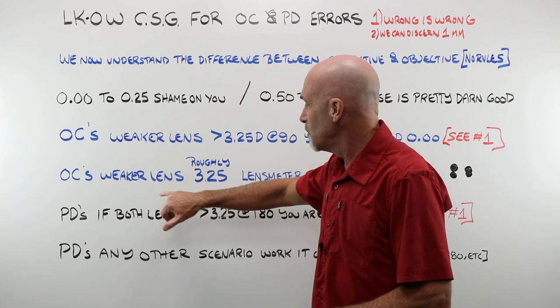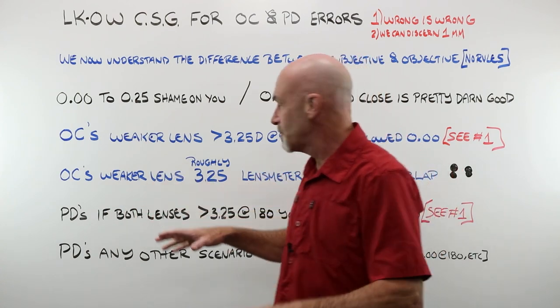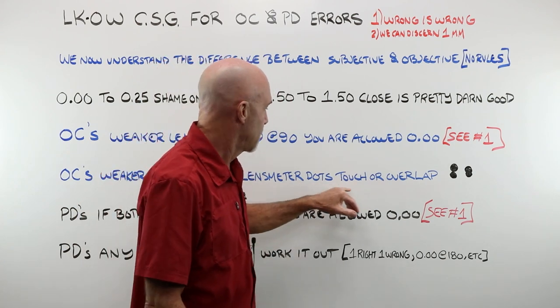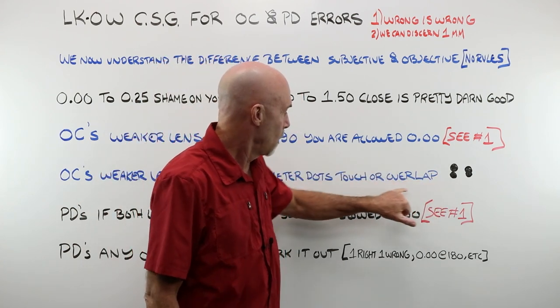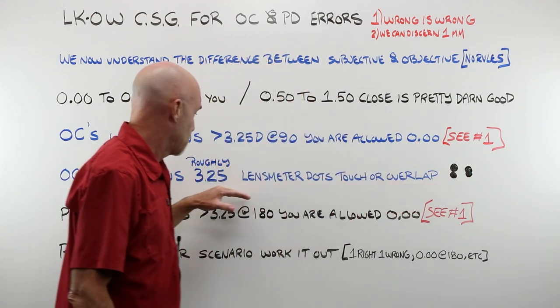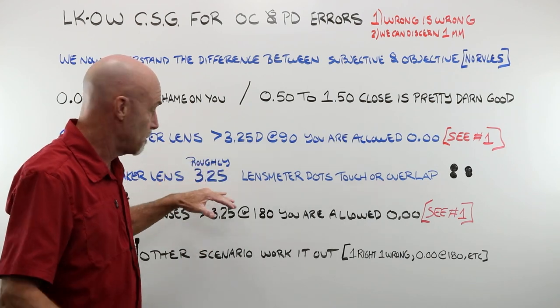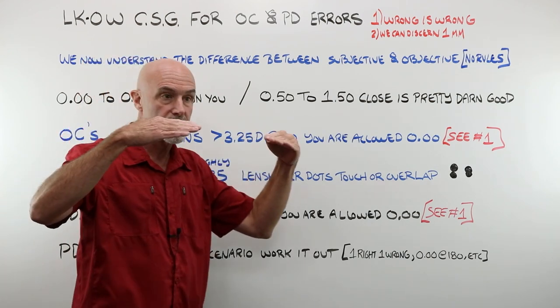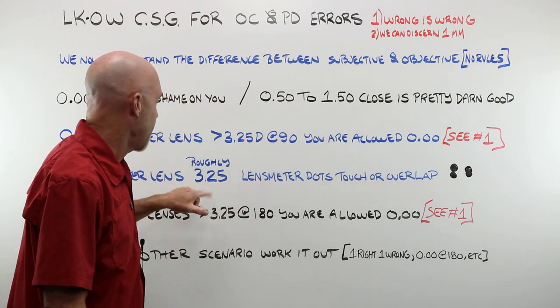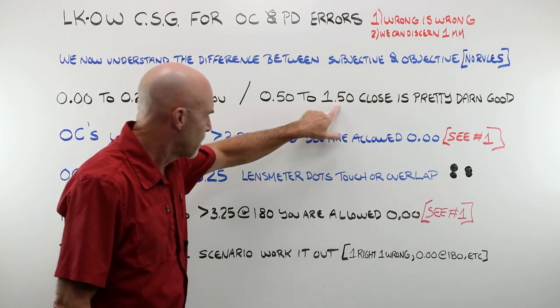If the OC in the weaker lens is around 3.25, well, then you want your lens meters, the dots, to touch, or best overlap or perfectly overlap is one. That's what you want to see. That's good. Then you're going to be okay. The OCs in each of those eyes are on the same plane or close enough that you're going to be okay. Less than 3.25 to the 1.50, you're going to kind of have to feel your way. I can't really tell you.